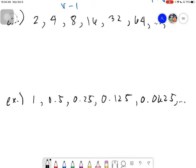So let's try to add. So we have 1 plus 0.5. The answer is 1.5. Plus 0.25, the answer is 1.75.